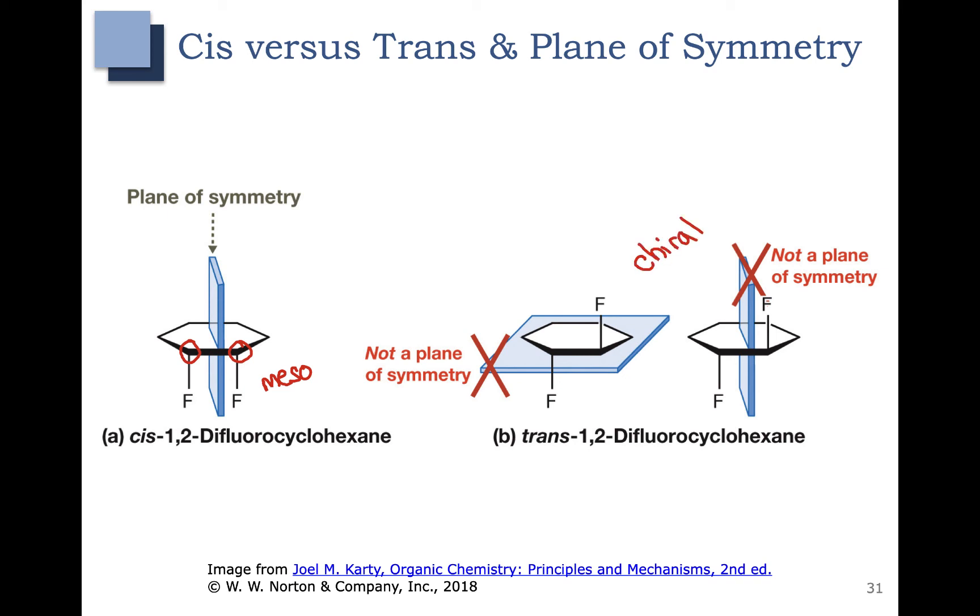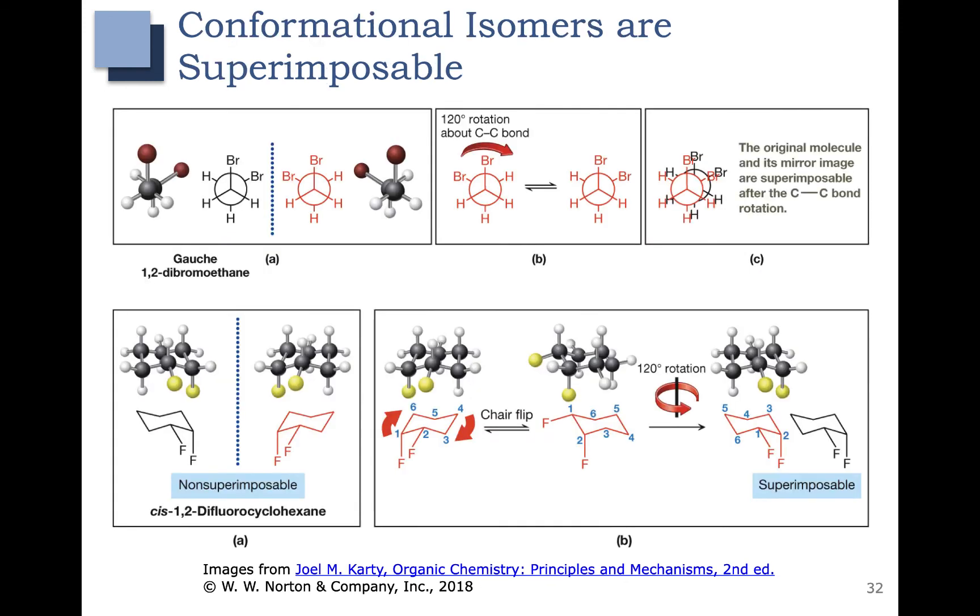Now one thing you might be thinking is, what happens in the chair conformation? The plane of symmetry isn't evident in the chair conformation. However, you do need to consider that the chair flip gives you a superimposable compound. We consider conformational isomers to be superimposable.